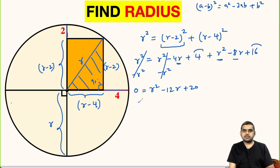This will also get cancelled and we will have 1 r square here minus 4r minus 8r will be minus 12r, then 4 plus 16 is 20. Here we get a quadratic equation r square minus 12r plus 20 equal to 0.